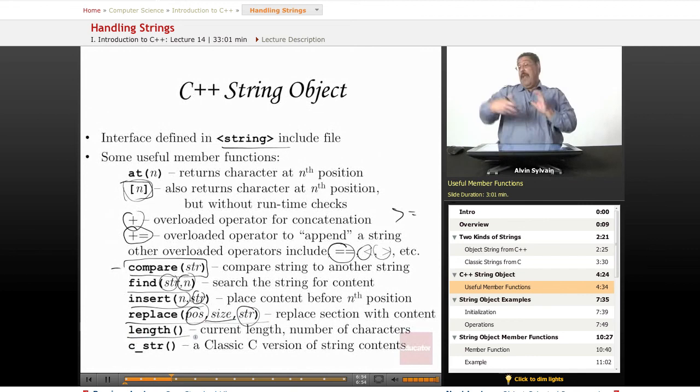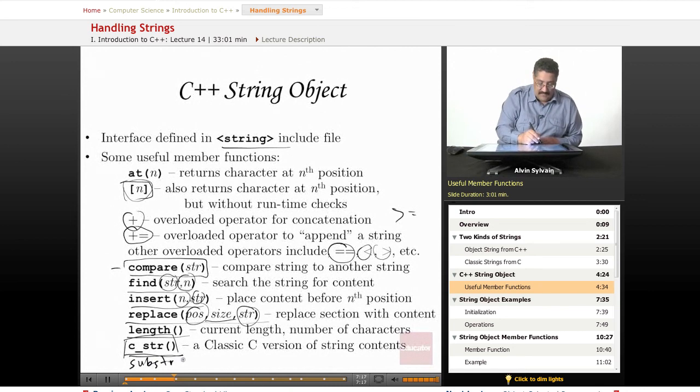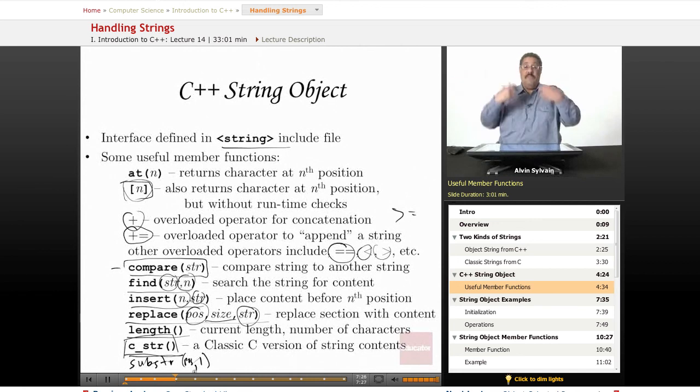Length is very straightforward. How long is my string? And then C string, because of the fact that there's so many functions out there that require a classic C string, you can take the string object and get something that's exactly the same thing as a classic C string. It's null terminated and everything else. There's also something I should have put on this list called substring, which you can give it the position and the length. So if you have a string that says, hello, you should give me the substring starting at three. That's a length of two. It'll bring back your low.